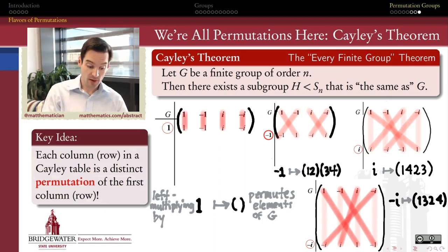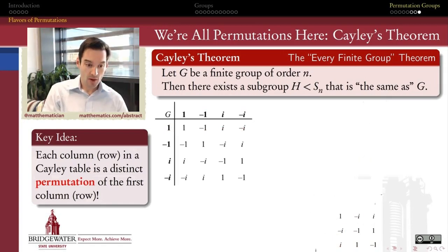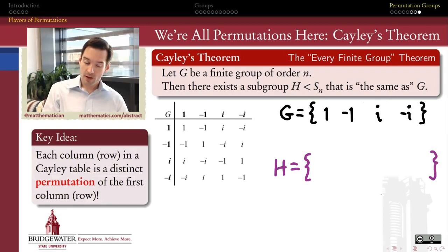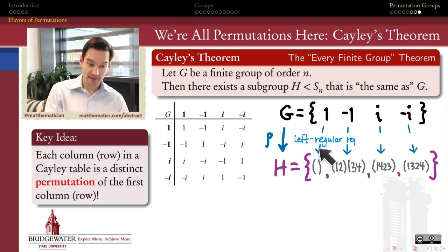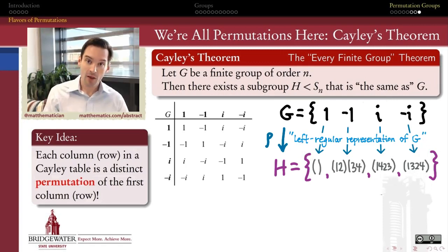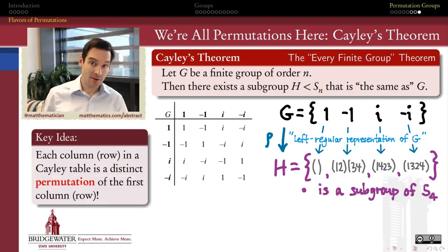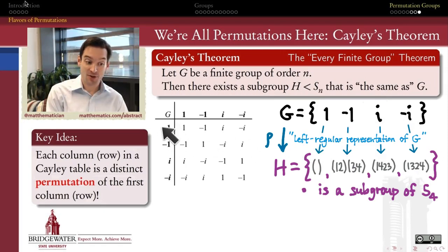So what I've just done is taken each one of the elements of my group and identified what permutation of the first row of my Cayley table is effected by multiplying on the left by that element. What I've done is set up a function whose domain is my group G and whose range is a set of 4 elements of S4 — 4 permutations: the identity permutation, the (1 2)(3 4) cycle for negative 1, and the 4-cycles (1 4 2 3) and (1 3 2 4) for i and minus i. What we've just done is constructed what algebraists call the left regular representation of this group.